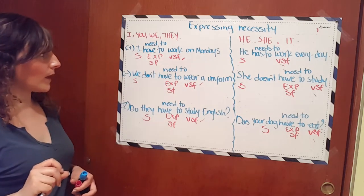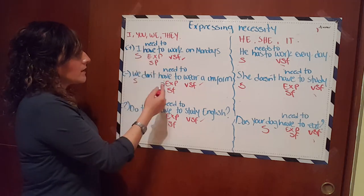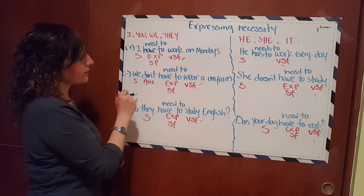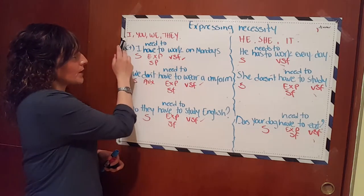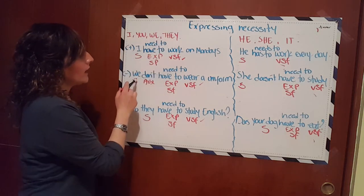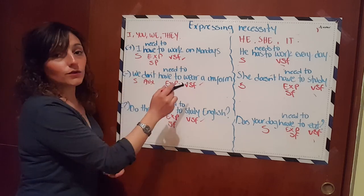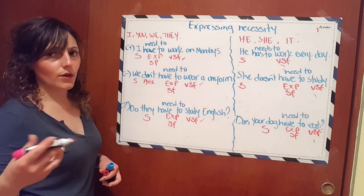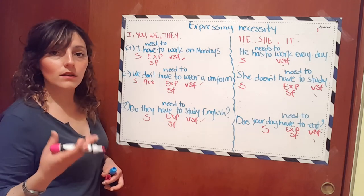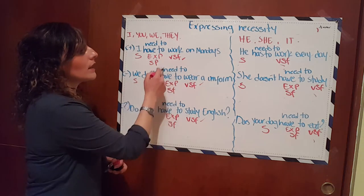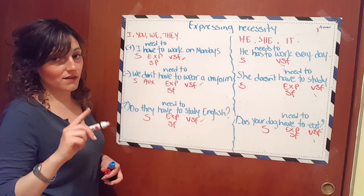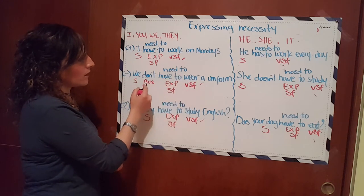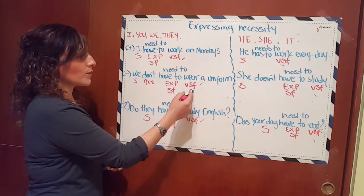For the negative form, remember we are talking about the present with subjects I, you, we, they — we use the auxiliary 'don't.' Then we use the expression: 'We don't have to wear a uniform at the university' — it is not necessary. Or: 'We don't need to wear a uniform.' Once again, it's not a necessity. Both options express the same idea, and after your expression you use the verb in simple form.